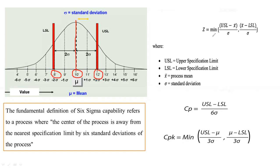The sigma level is the Z value, which is the minimum of: upper specification limit (USL, in our case 12) minus mean (10) divided by the standard deviation, and on the lower side, mean minus lower specification limit (LSL, which is 8) divided by the standard deviation. Whichever value is minimum, that will be your sigma level of the process.